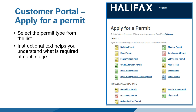The first step in applying for a permit on the Customer Portal is to identify the type of permit required. Within the application, you will encounter instructional text. These notes, guidelines, and instructions are intended to help you understand what is expected at each step. Instructional text is limited and does not replace the wealth of information on the website and in the permit guides that may support you in your application.